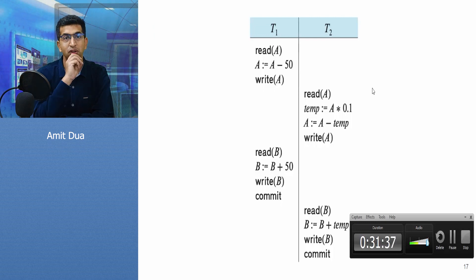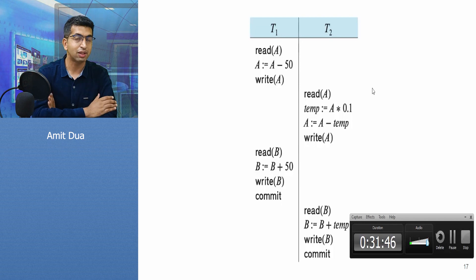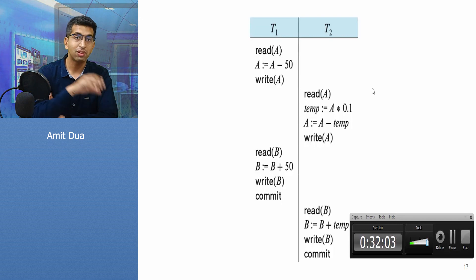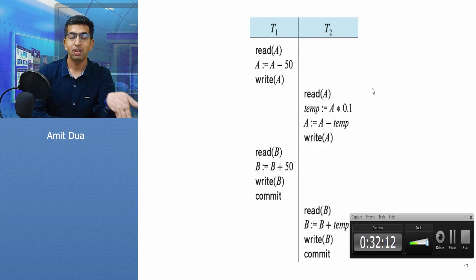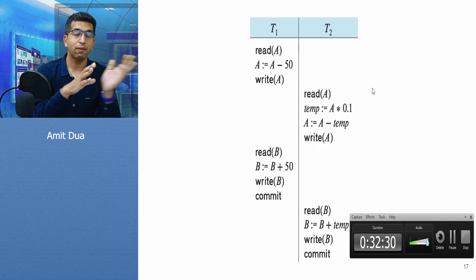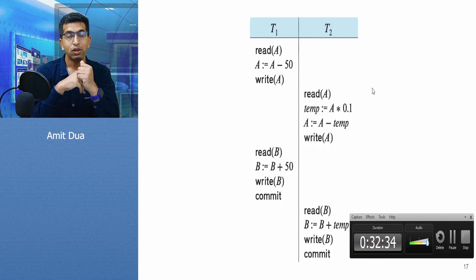Now consider a scenario where two transactions are working and there is a dirty read — one transaction reads a data item written by another transaction that has not yet committed. For example, transaction one writes data item A and transaction two reads it. This is a dirty read because transaction one has not committed yet. If there is a failure in transaction one, transaction two also needs to roll back, because it read data from transaction one. If it does not roll back, the data transaction two used becomes inconsistent, violating consistency.